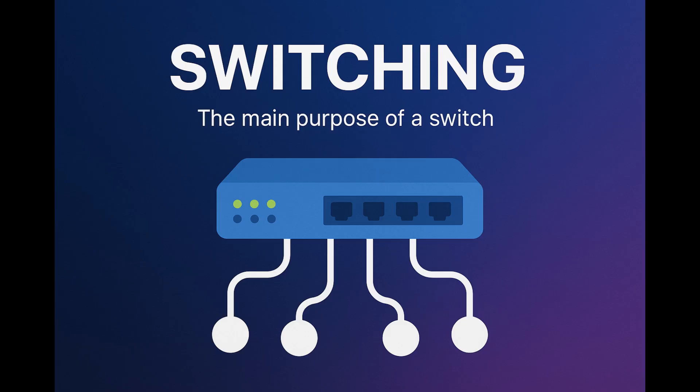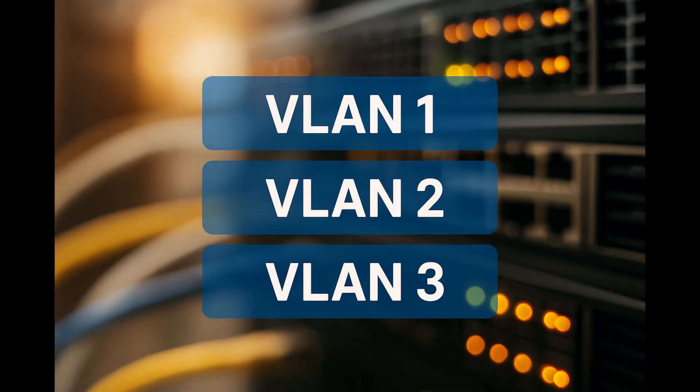A layer three switch can do simple routing, which will make internal communication faster. So when we need to route traffic locally between VLANs, we can use a layer three switch for that. Now I mentioned VLANs — what is this? A LAN, as you already know, is a local area network, a private internal network formed by using a switch. A switch connects all the network devices in the office, for example, and that forms a LAN. A VLAN is a virtual local area network — it's simply a way to divide one physical network into multiple logical, smaller, isolated networks.